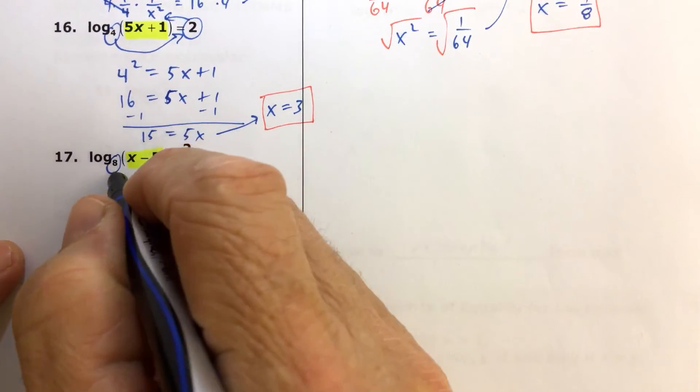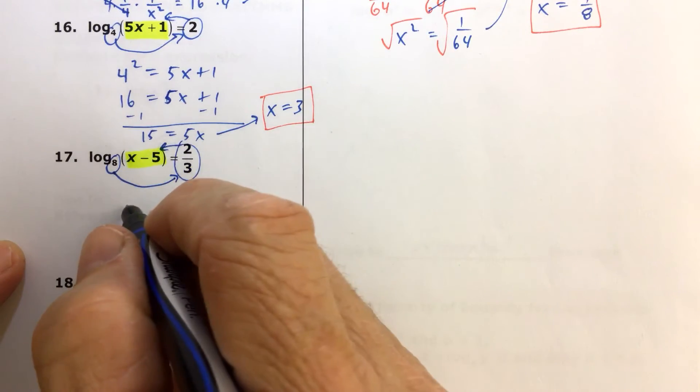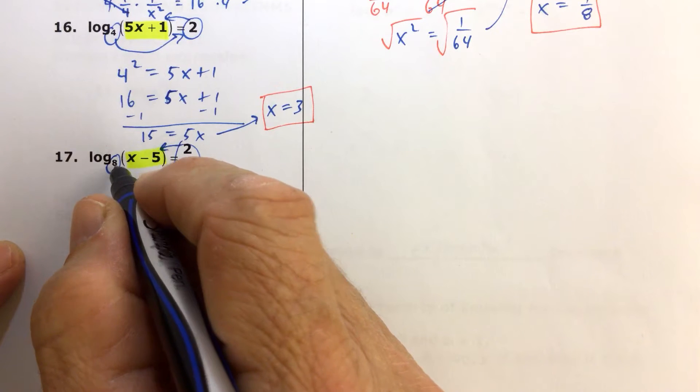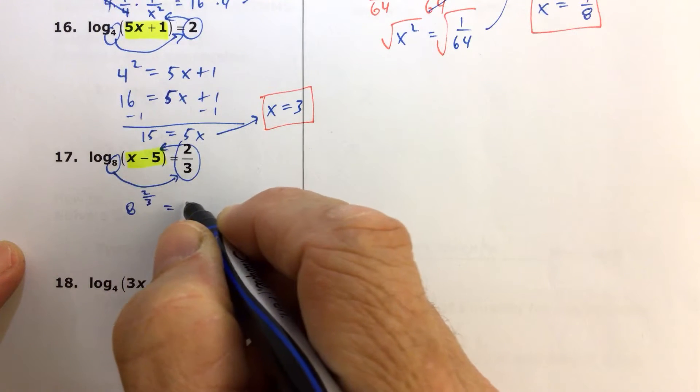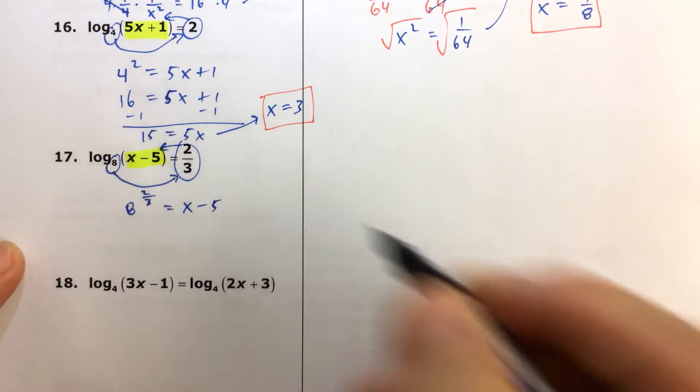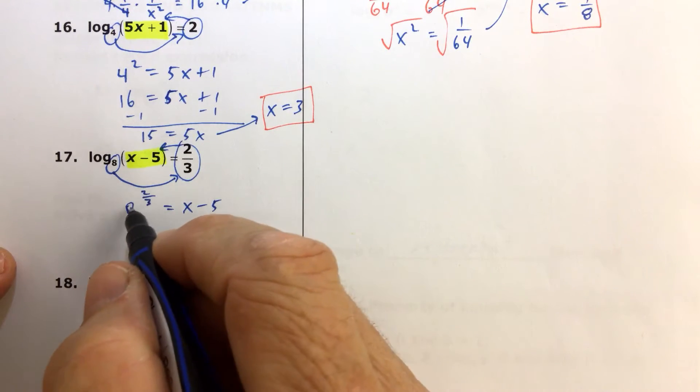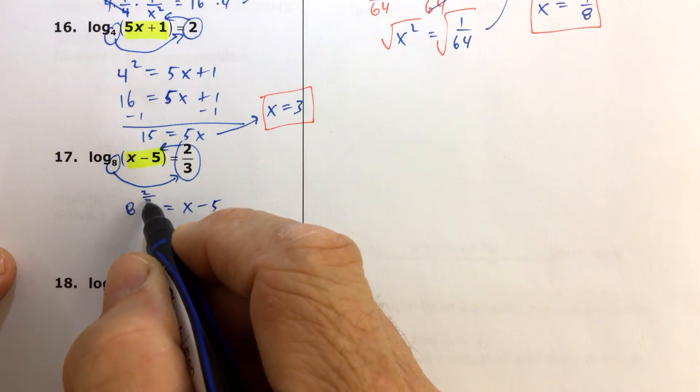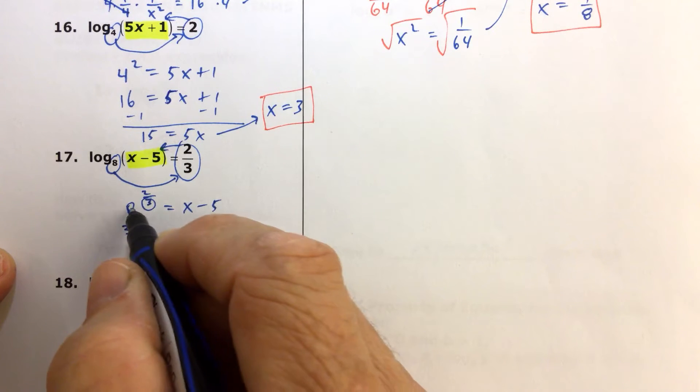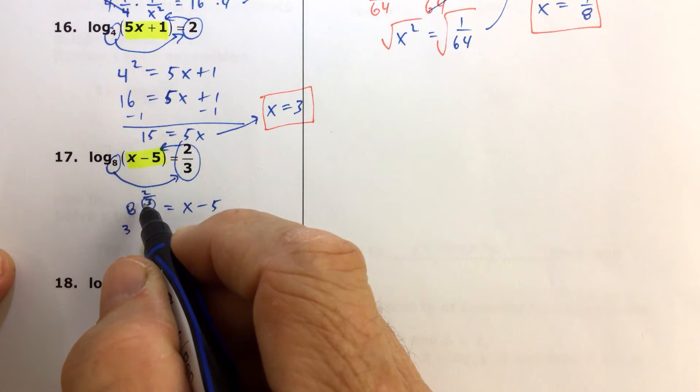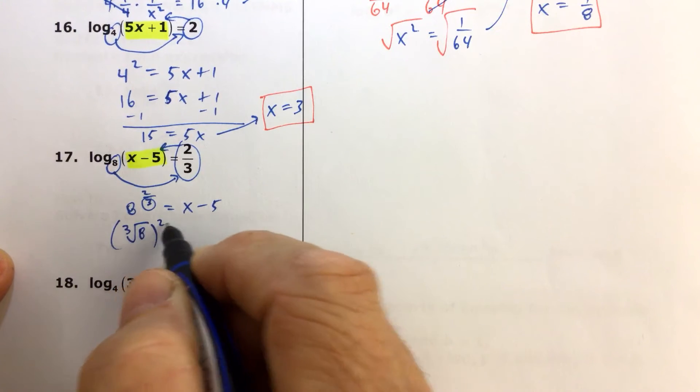So number 17, again, our variable is locked up. We're going to unlock it by taking the base, raising it to the power of 2 thirds, and setting that equal to x minus 5. So now we get some practice with what you guys learned last unit, and that is how to take a number and raise it to a fractional exponent. And this says that to simplify 8 to the 2 thirds, we're going to take the cube root of 8, and we're going to square that.